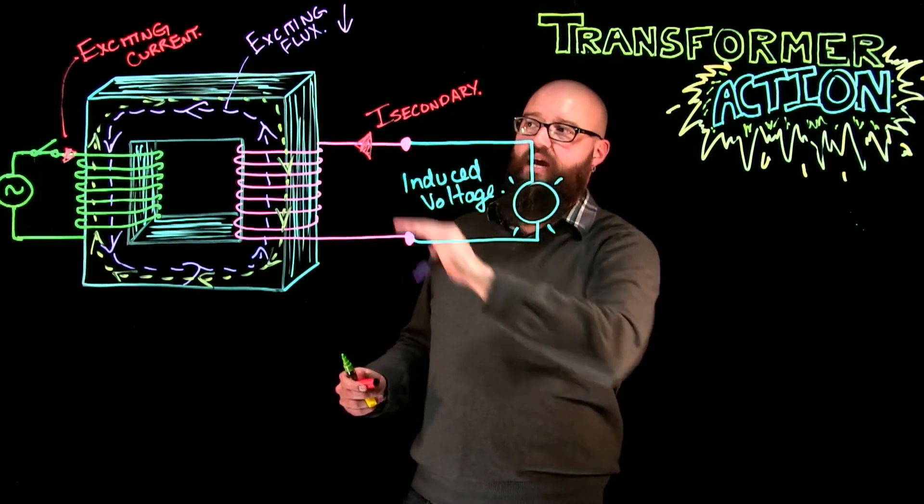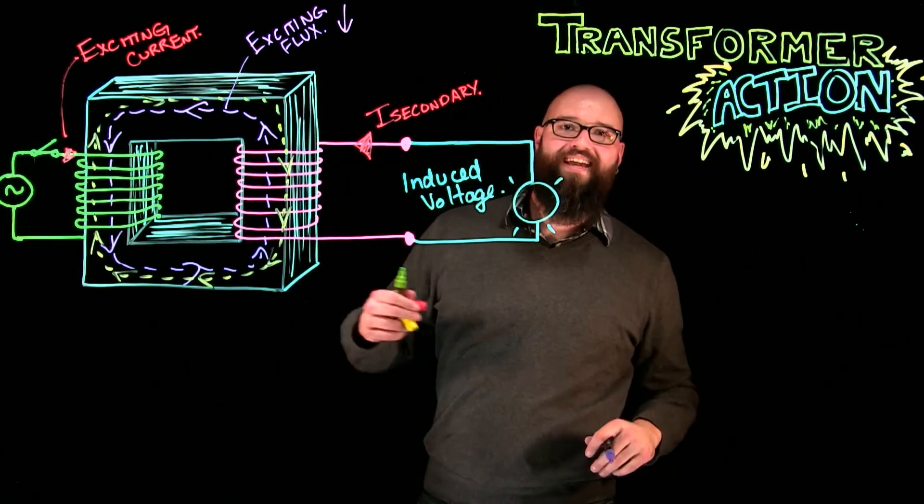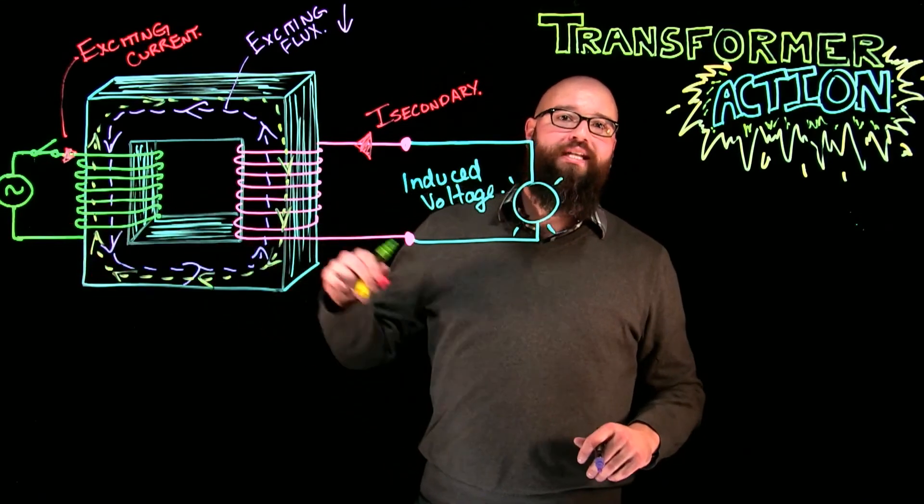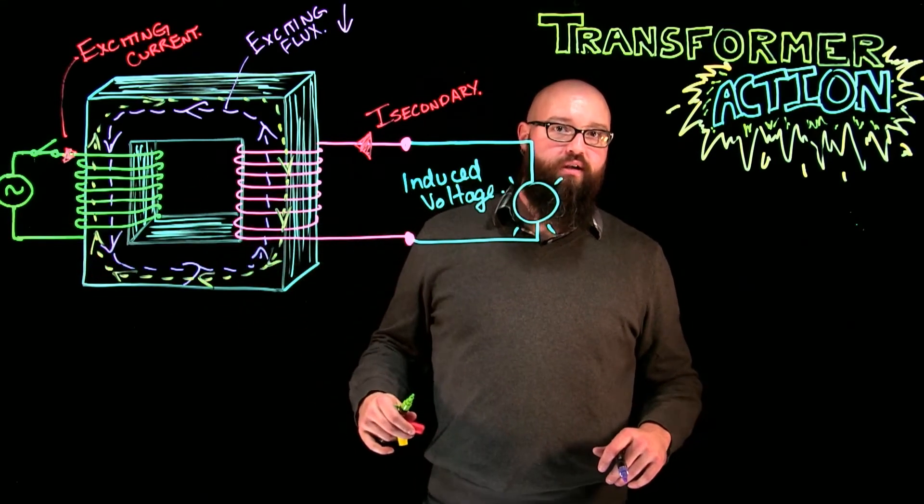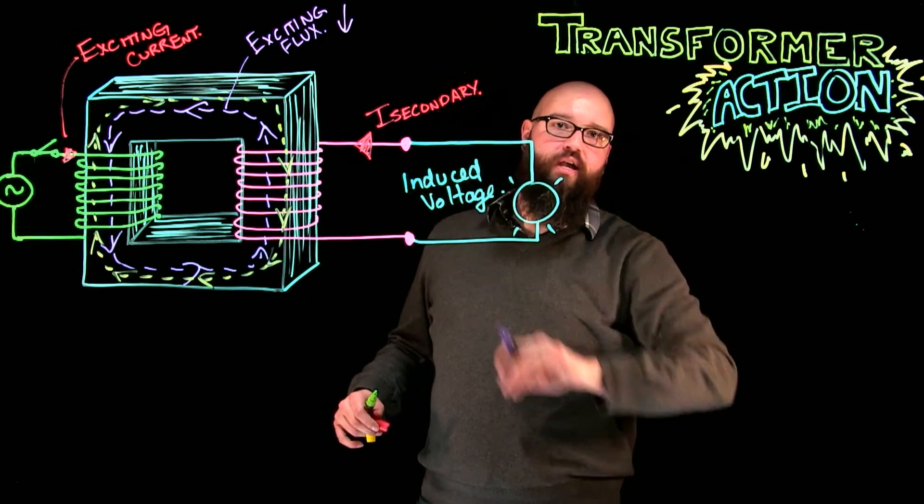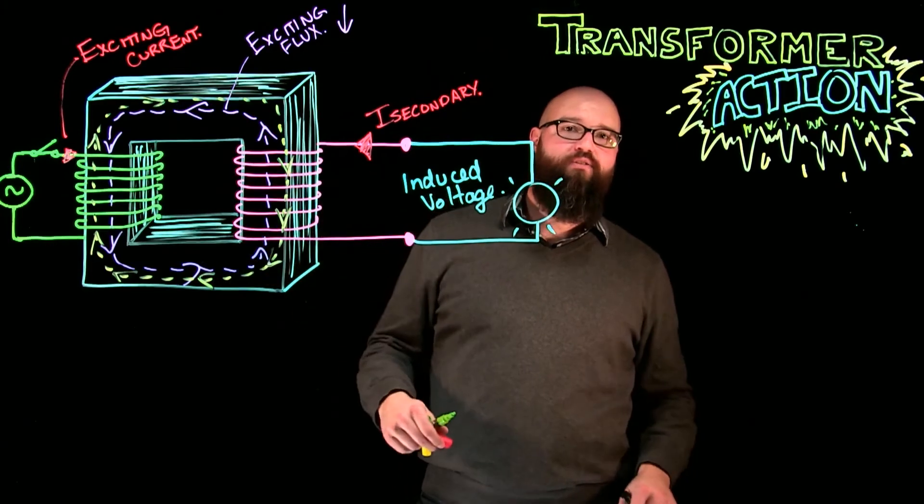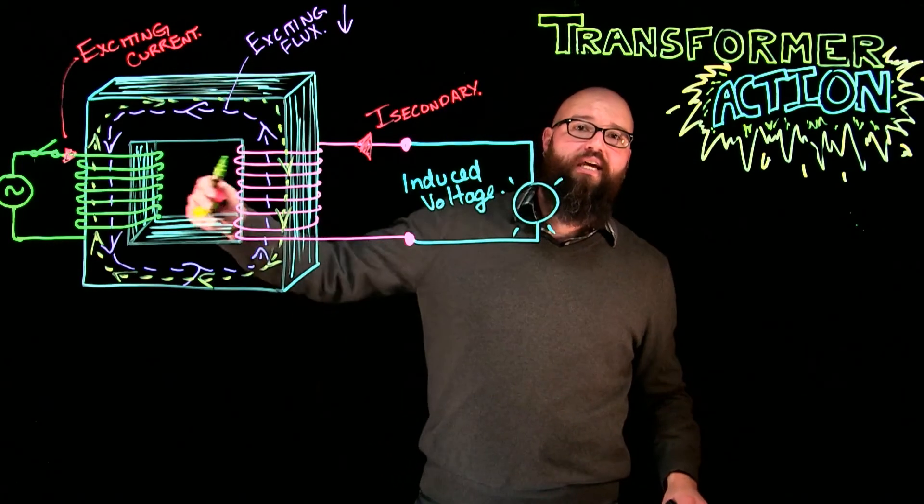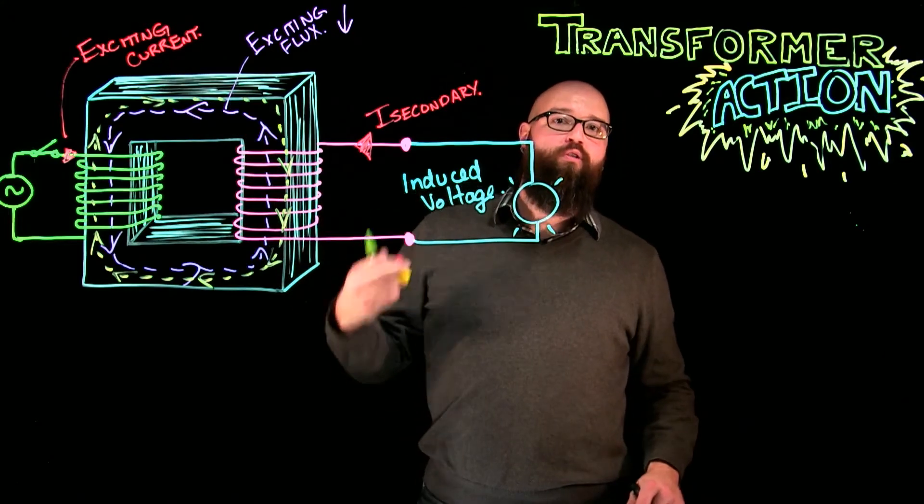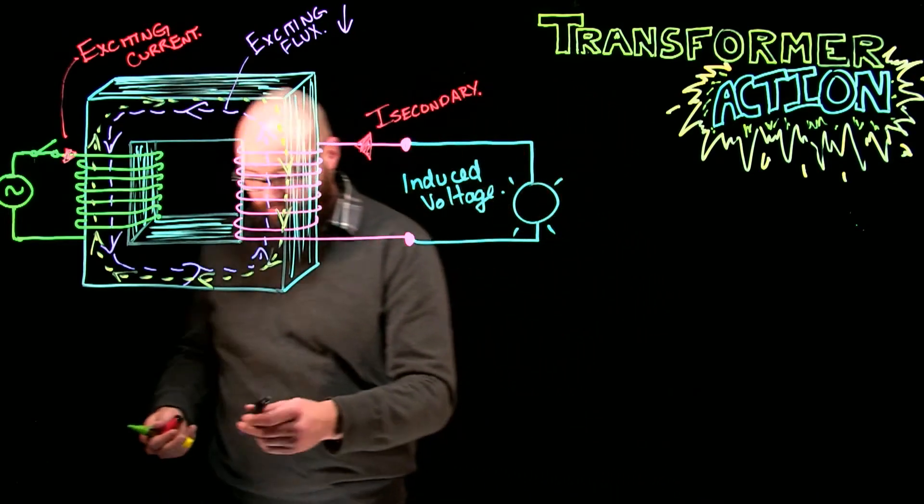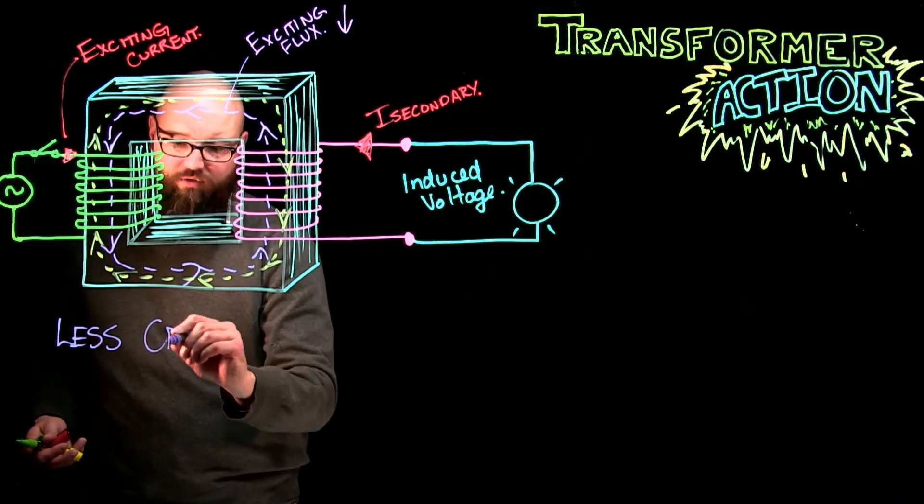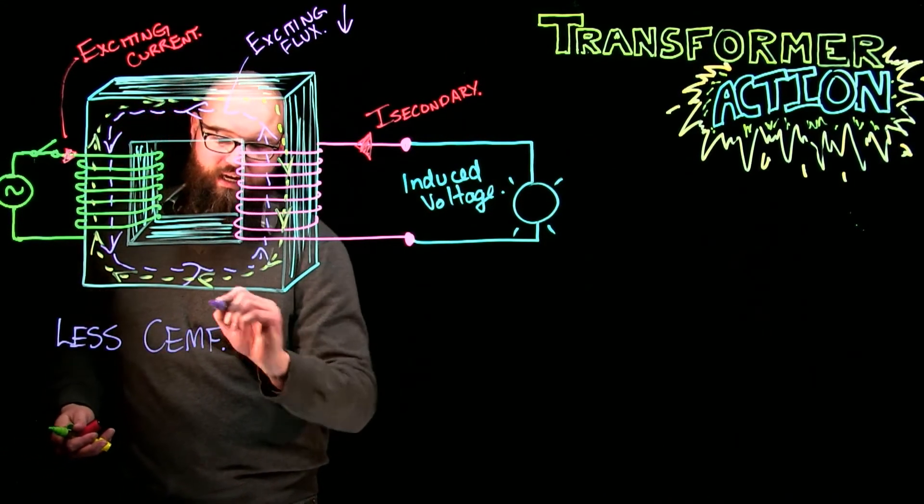the exciting flux is what created the counter-EMF. The counter-EMF on our primary is what limited the current on the primary. So, by increasing current on the secondary, we have created a magnetic field that cancels out the exciting flux. The exciting flux being cancelled ends up with an overall lower exciting flux, which causes less counter-EMF.